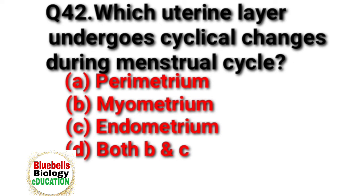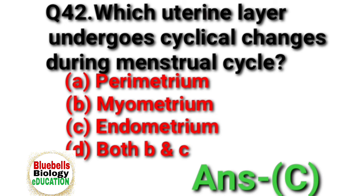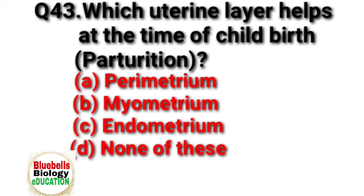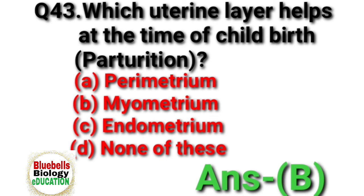Question 42. Which uterine layer undergoes cyclical changes during menstrual cycle? Option A: perimetrium. B: myometrium. C: endometrium. D: both B and C. None of these. Answer is B.